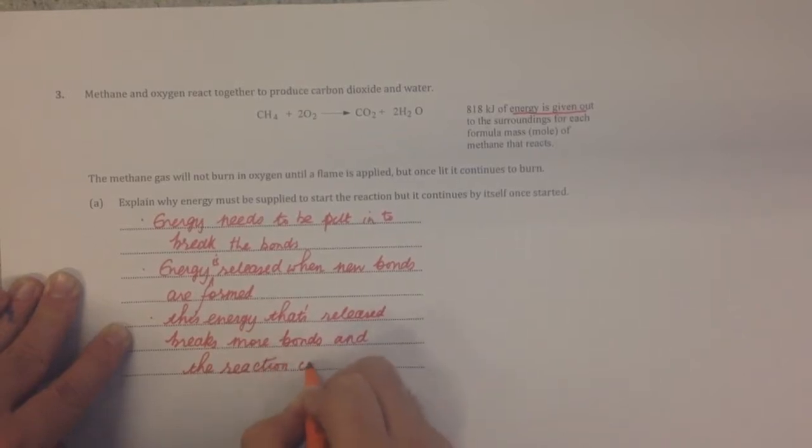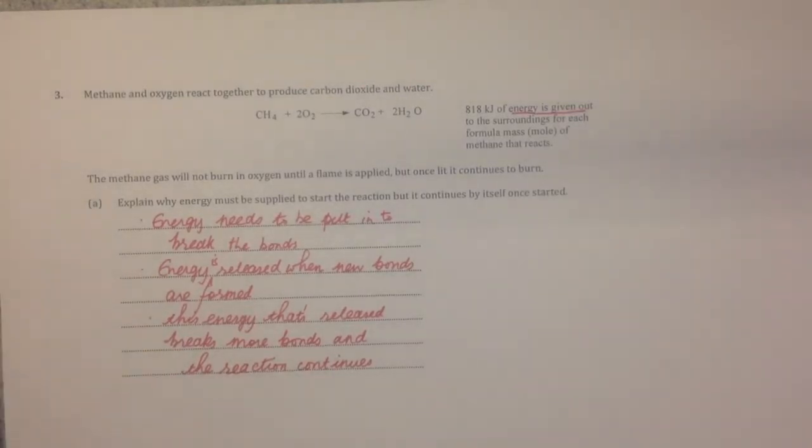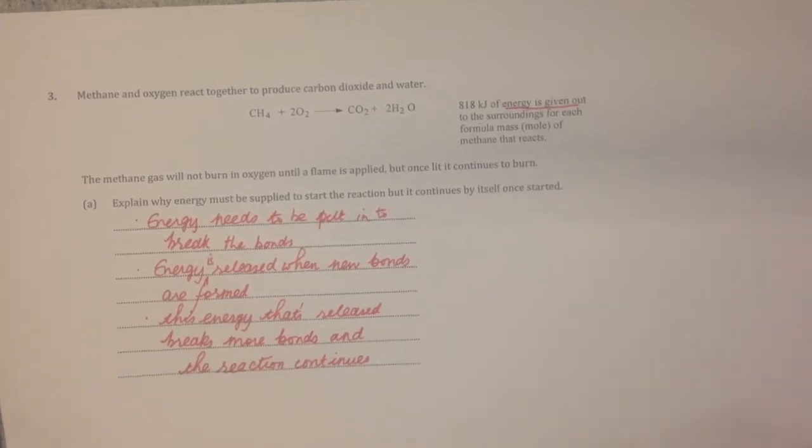Once you've started the reaction, the energy given out breaks the bonds of the stuff that hasn't reacted, and the reaction keeps going. You know this instinctively—if you put a lit match to methane, it goes whoosh. That shows the reaction keeps going by itself; it's self-sustaining.